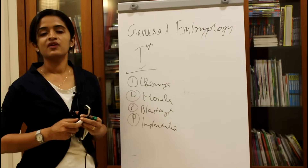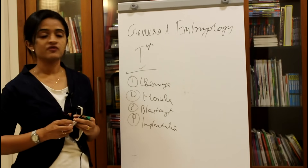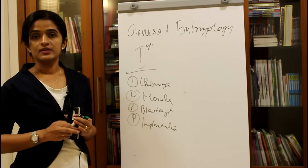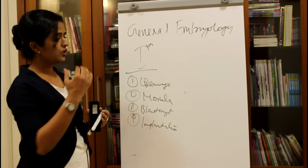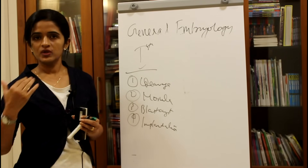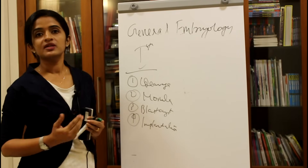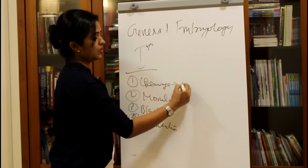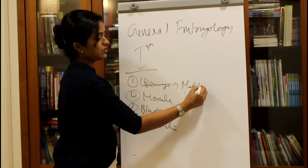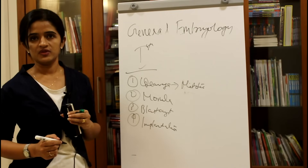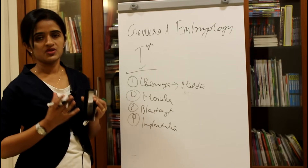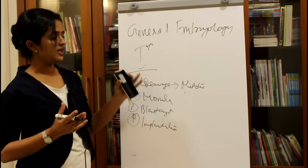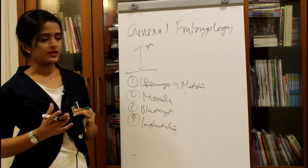After fertilization it results in the formation of the zygote. The zygote or fertilized ovum is very large, so in order to bring its size to a normal size of a cell it undergoes repeated division — repeated mitotic division — known as cleavage division. Cleavage division is a process by which the larger fertilized cell undergoes division so that it comes back to normal cell size.